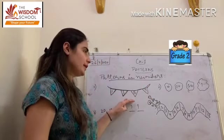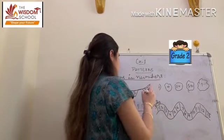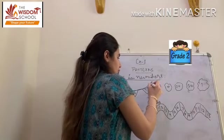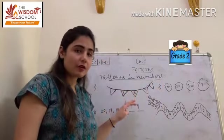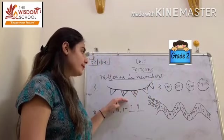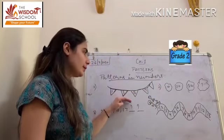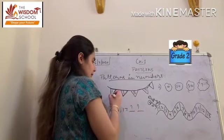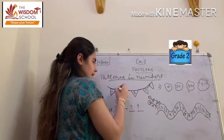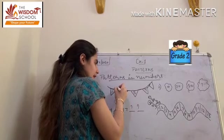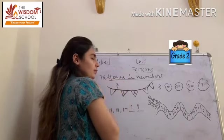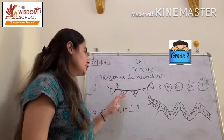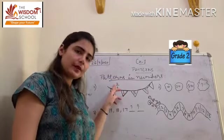So children, we will observe how these numbers form a pattern. Here, alternate numbers are written. After 1, we have written 3 — that means we have missed or skipped the number 2. So after 1, we have written 3.